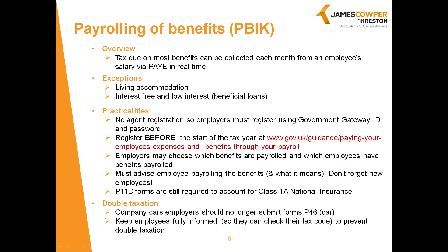Payrolling benefits, also known as PBIK, is an alternative way of taxing benefits in kind. Rather than submitting P11Ds for your employees and having their benefits taxed through their tax code number or after the end of the tax year, what you do is tax a proportion of their benefits at each of their pay dates. So if you've got a car benefit, you would divide the car benefit by 12 and tax it one-twelfth each month.